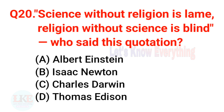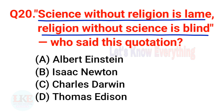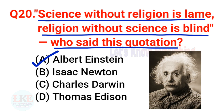Last and final question, number 20: 'Science without religion is lame; religion without science is blind.' Who said this quotation? A) Albert Einstein, B) Isaac Newton, C) Charles Darwin, D) Thomas Edison. The right answer is option A, Albert Einstein. Albert Einstein said, 'Science without religion is lame and religion without science is blind.'